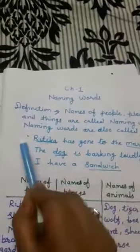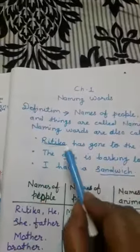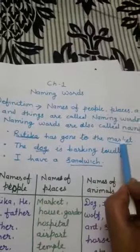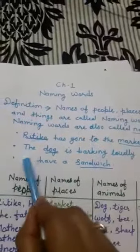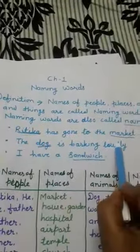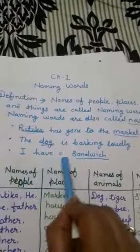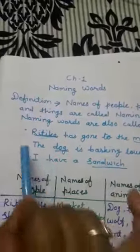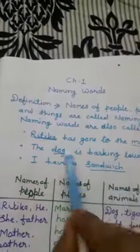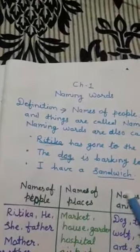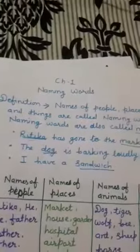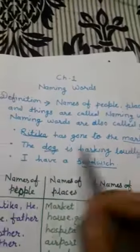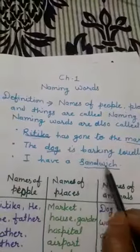Look here, some examples. Ritika has gone to the market. The dog is barking loudly. I have a sandwich. In these examples you can see some naming words — like Ritika, market, dog, sandwich.